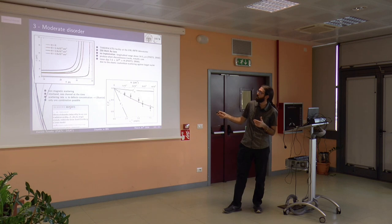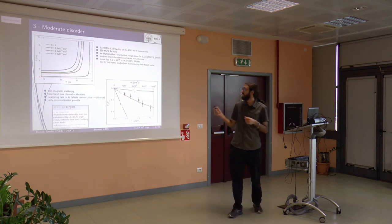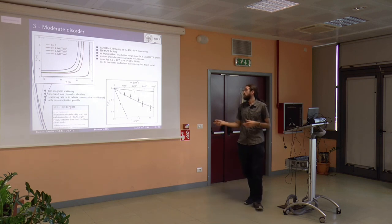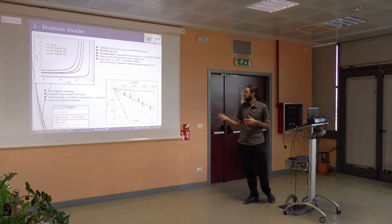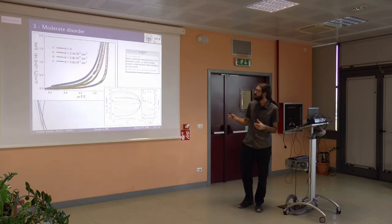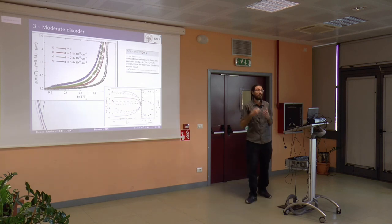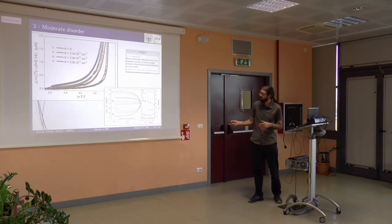For example, the critical temperature — where the London penetration depth diverges — decreases with increasing dose, and the low-temperature value of the penetration depth increases. We then try to interpret this data within the model. We fix the last remaining parameters by reproducing the decrease of critical temperature and again get a nice agreement. What we additionally get out of the model — beyond just the measurement — is information about the values of the gaps on the different bands as a function of temperature and as a function of increasing disorder.